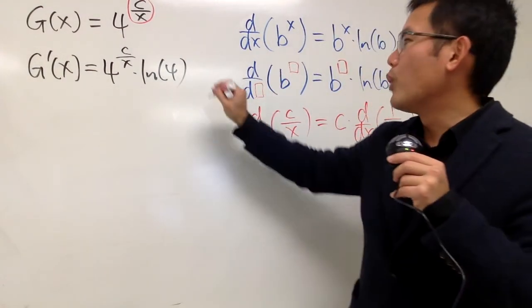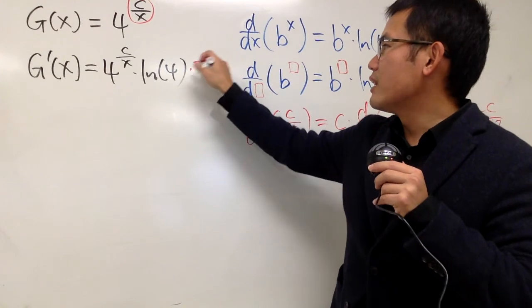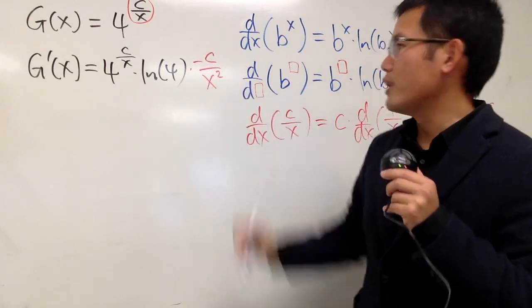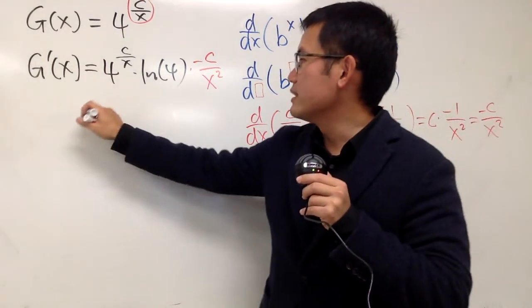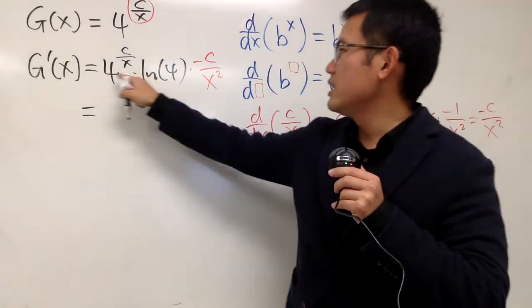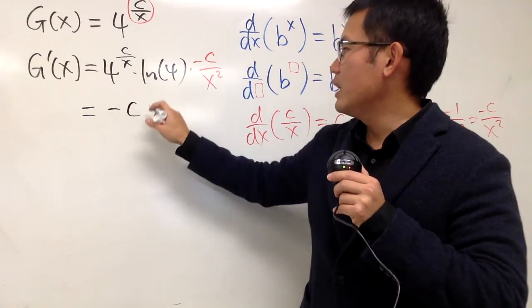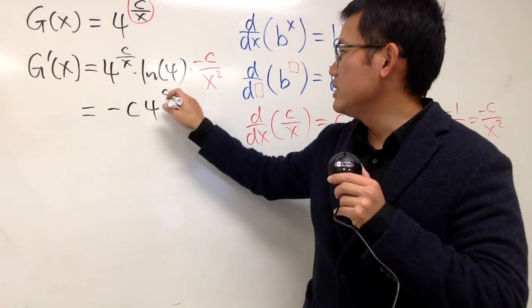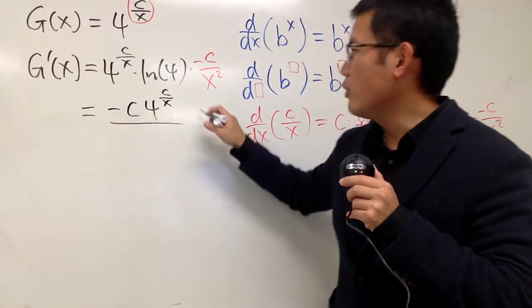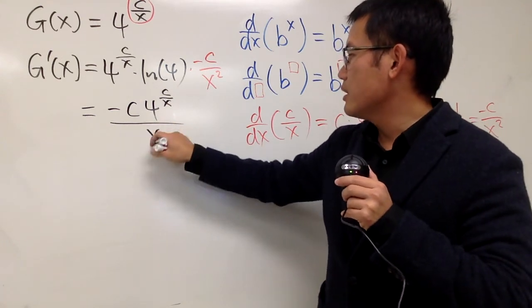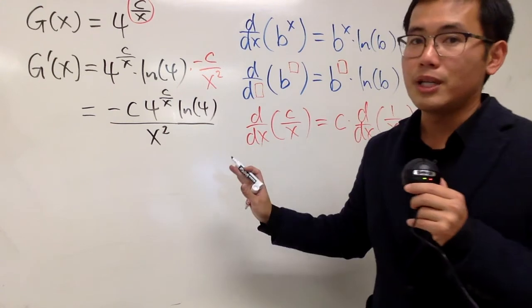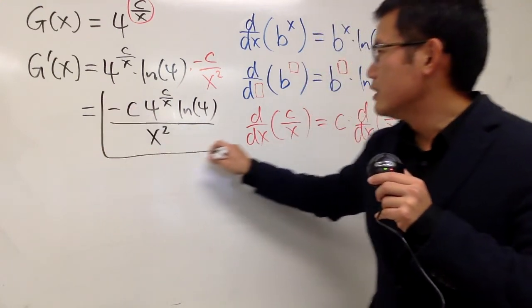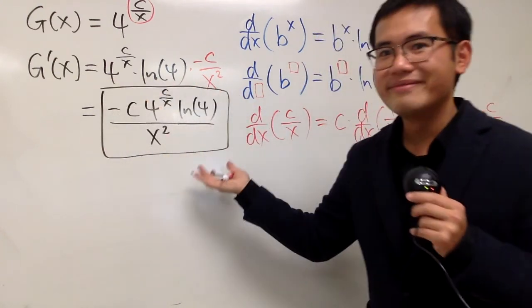And that's exactly what we will have to multiply right here. Negative c over x squared. Like that. Lastly, perhaps we'll just write things down in a better form. Because, let's see, we have the negative c, and then we have the 4 to the c over x power, and x squared on the bottom. And don't forget the ln 4, it's actually on the top. So I almost wanted to put it on the bottom, which is not correct. This right here. That's it.